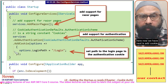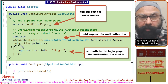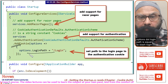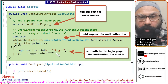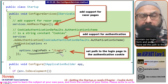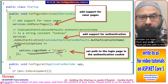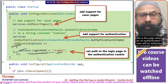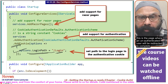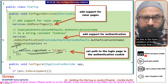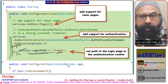Next we have AddCookie(), where we set the path to the login page: options.LoginPath is set to '/login'. The Login Razor page will contain our login form. This is the page where an unauthenticated user will be redirected to complete the login process. That is the basic addition of services to take note of.